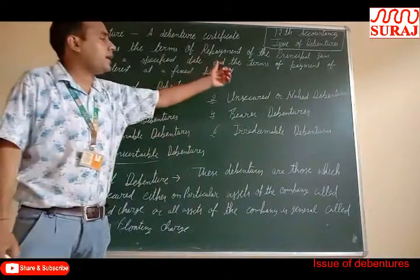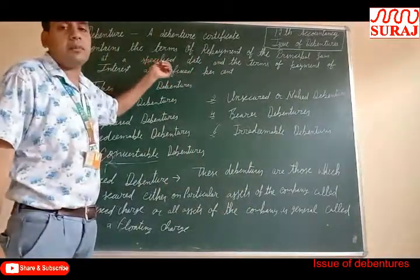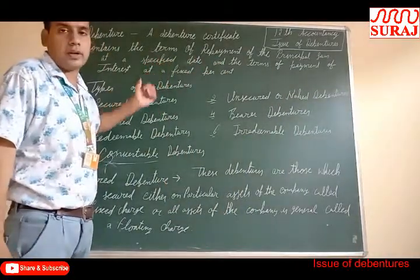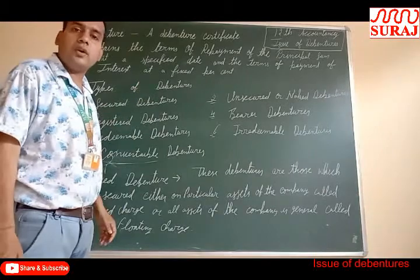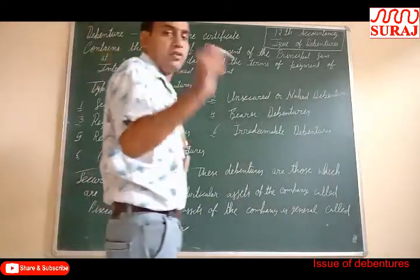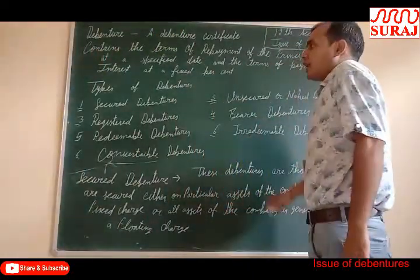On which rate the interest will be paid to the debenture holder — that rate is also written on the certificate. Now, types of debenture. Debentures are of 7 types.